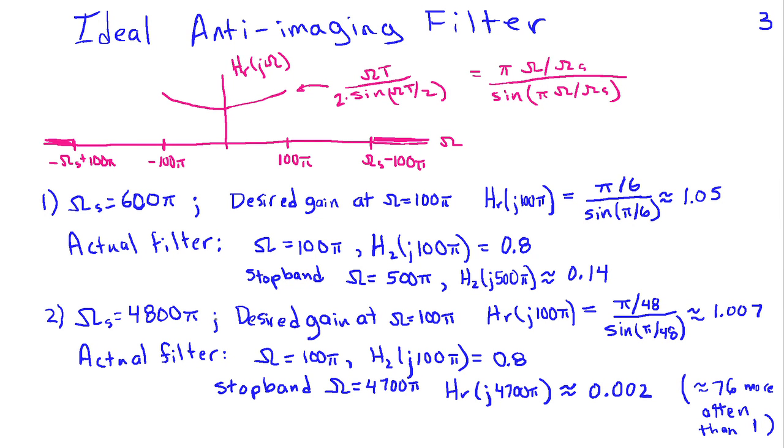Now when we do 8 times oversampling, we're changing ωs, so the desired gain in the passband of the anti-imaging filter changes. If you put in 100π for ω and 4800π for ωs, you find that your desired gain is given by this expression here, which evaluates to 1.007. So it's practically constant over the entire bandwidth. Very slight curvature in the ideal case.